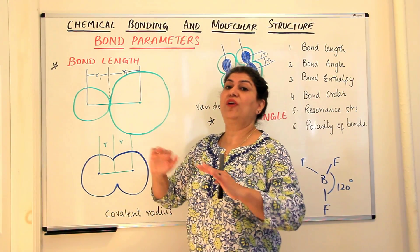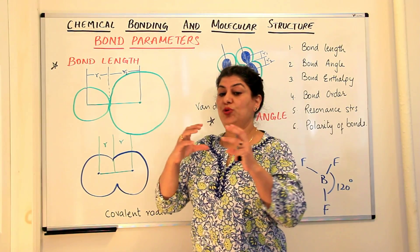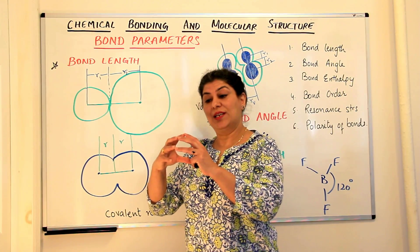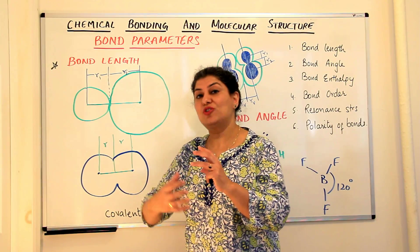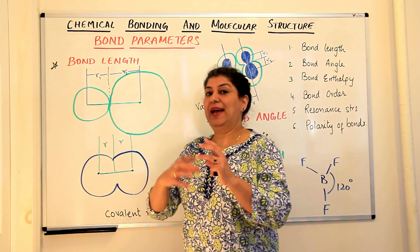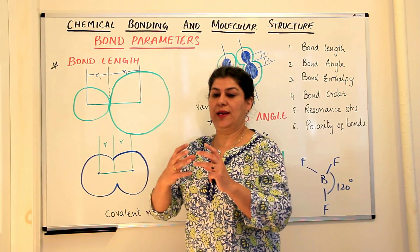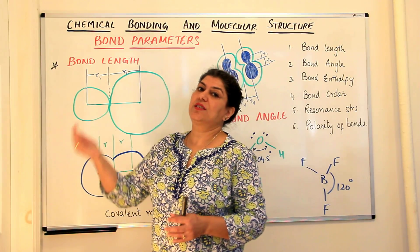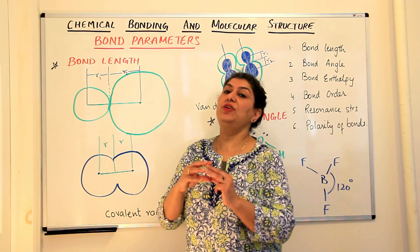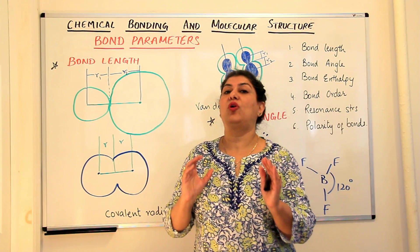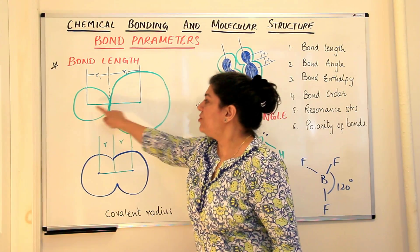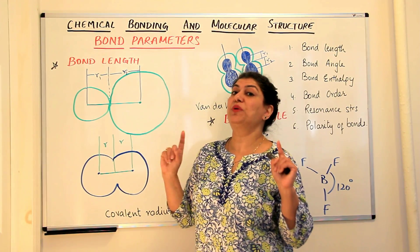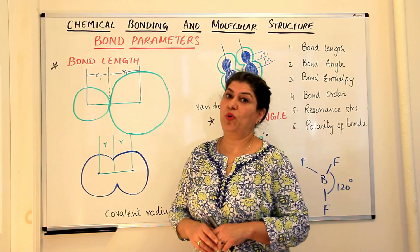The actual definition is that the distance between the cores of two atoms that are bound together is known as the bond length. The core consists of — as I told you in previous videos — if you imagine an atom to be a walnut, the shell is the outermost shell known as the valence shell. Everything inside the valence shell — the penultimate shell, all shells under it, and the nucleus — they together form the core. The distance between the centers of the cores of two atoms is known as the bond length.